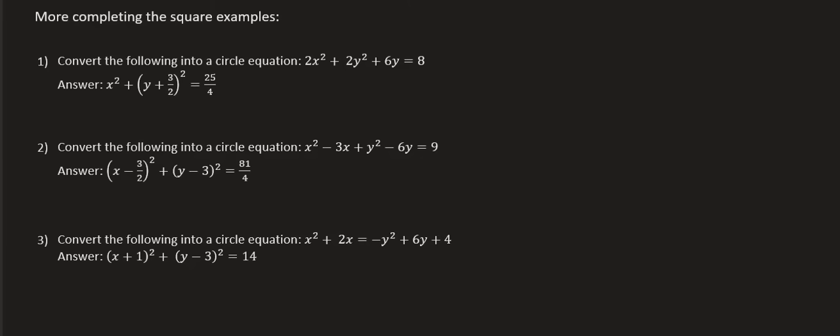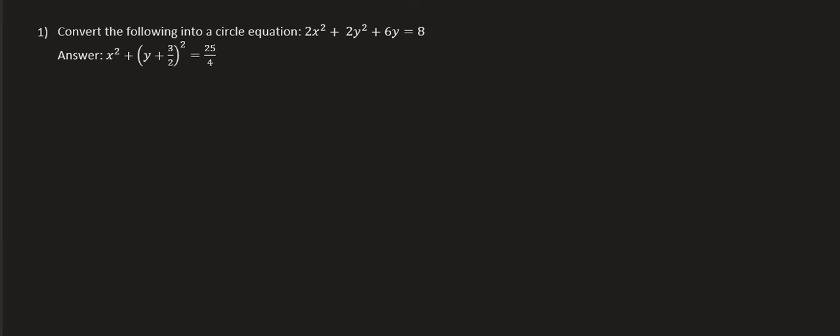So I'm going to start with number one. With number one, what we want to do is realize that this equation that they've given us has a 2 in front of the x squared and the y squared and that can't happen. So what I'm going to do is just write out this equation over here. I'm then going to divide everything by 2, so that's x squared plus y squared plus 3y equals 4.